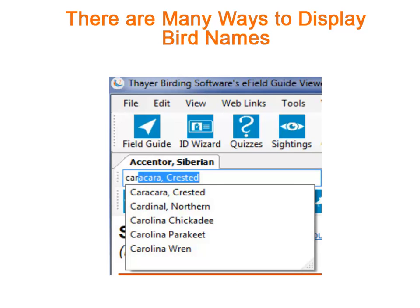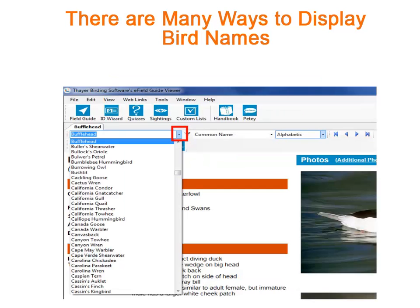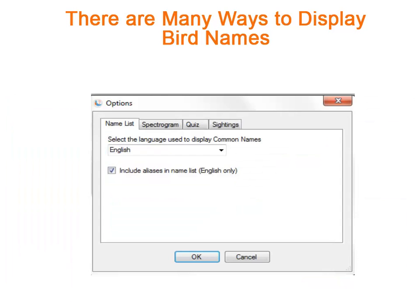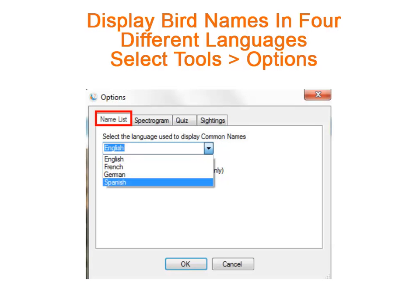I think the easiest way to find a bird by name is just to type in its name. So far we've seen that you can find a bird by using the drop-down list, or by moving forward and backward with blue arrows, or even by finding obsolete bird names. You can also find names of birds in French, German, and Spanish using version 7.